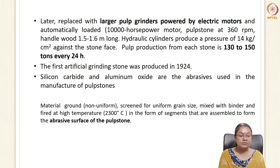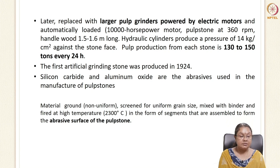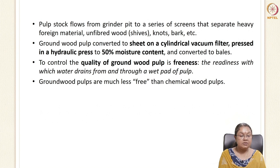Later, these grinders were replaced with larger pulp grinders powered by electric motors. Grinding speed increased significantly, producing around 130 to 150 tons per day in 24 hours. Motor power was 10,000 hp and the pulp stone rotated at 360 rpm. The first artificial grinding stone was discovered in 1924 and contains abrasives like aluminium oxide and silicon carbide. The material is ground to non-uniform size, screened to get uniform-sized material, bound using a binder, heated at very high temperature, and used to develop the abrasive surface of the pulp stone.